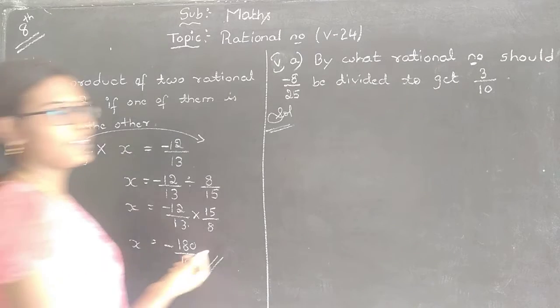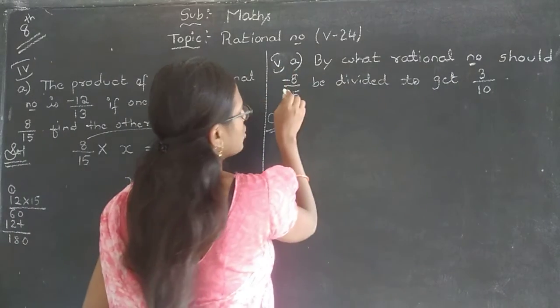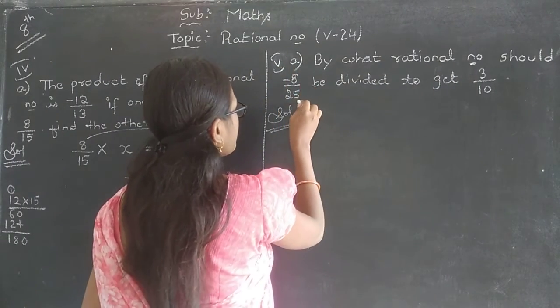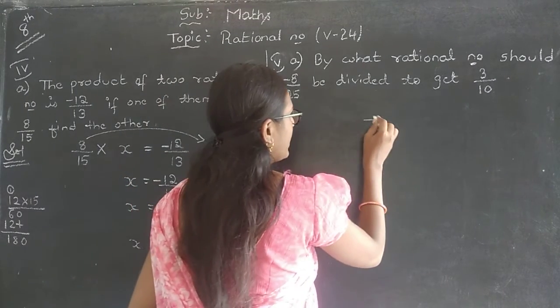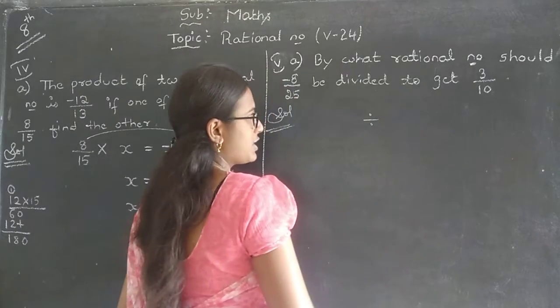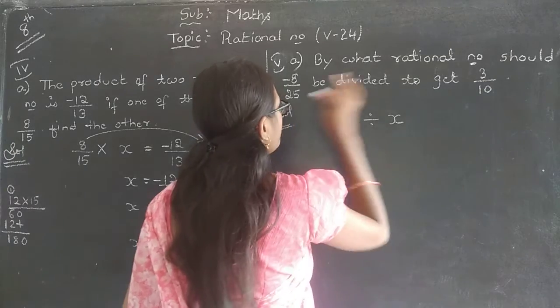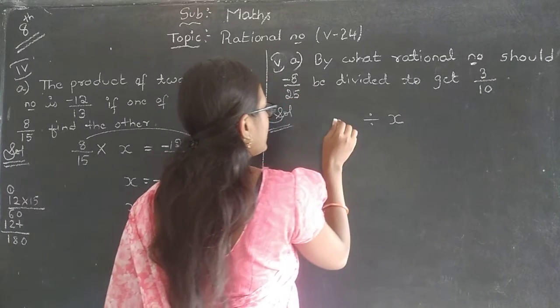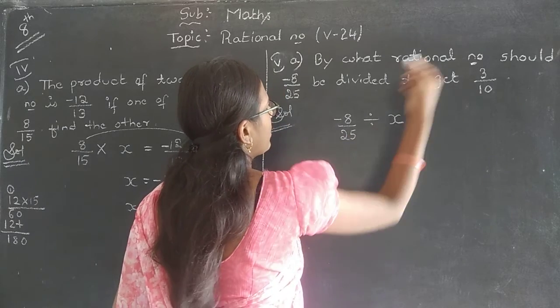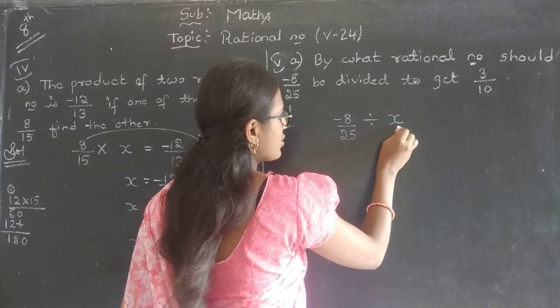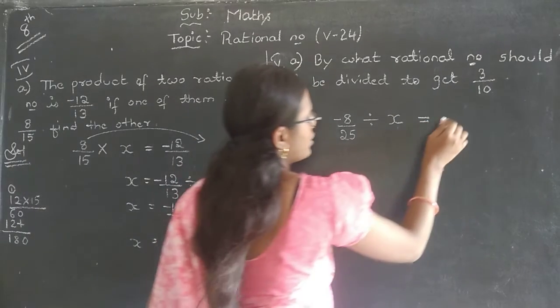Now, let me solve with the next question. That is, fifth main question. By what rational number should minus 8 by 25 be divided? So, by what number it should be divided? Divided by means division symbol. By what number? Meaning divisor, we don't know. So, which is the dividend? Minus 8 by 25. Divided by what number it need to be divided? So, its divisor is question mark.